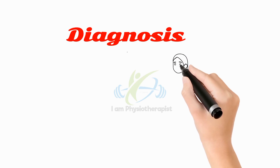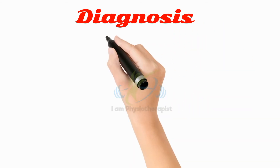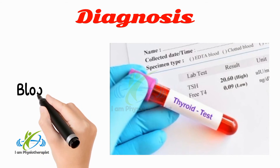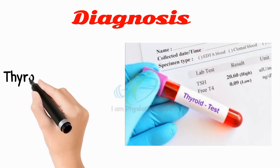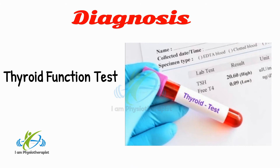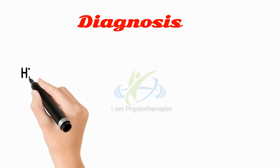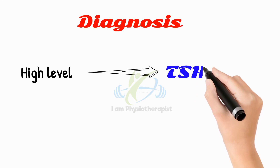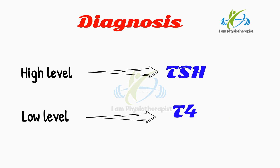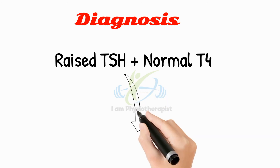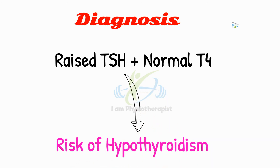A blood test measuring your hormone levels is the only accurate way to find out whether there is a problem. The thyroid function test checks the levels of thyroid stimulating hormone (TSH) and thyroxine (T4) in the blood. A high level of TSH and a lower level of T4 could mean you have an underactive thyroid. If results show raised TSH but normal T4, you may be at risk of developing an underactive thyroid in the future.